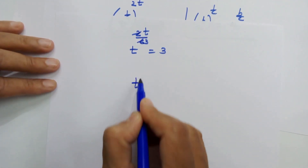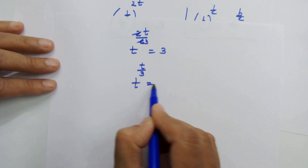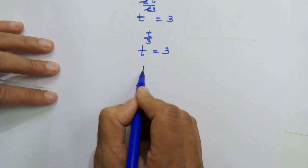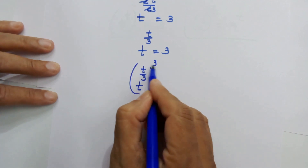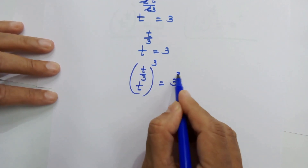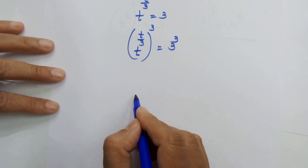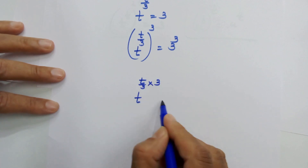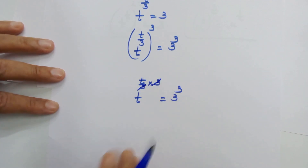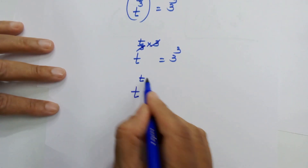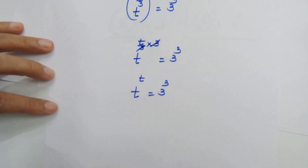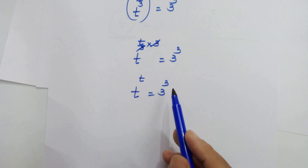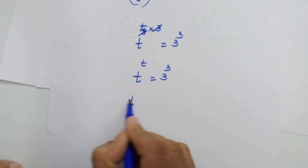Since 2 threes are 6, we simplify to t raised to t upon 3 is equal to 3. Now let's raise both sides to the power 3. Our next step is t raised to t upon 3 times 3 is equal to 3 raised to 3. Here the base and exponent are the same on both sides, so we can equate: t is equal to 3.